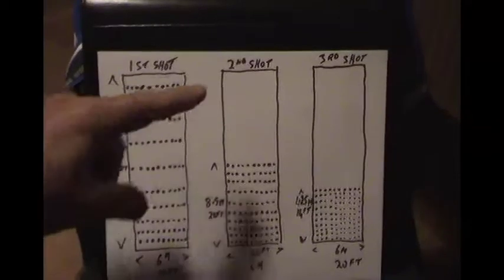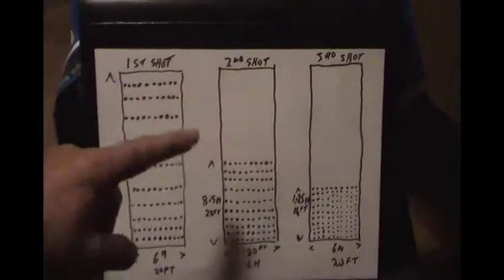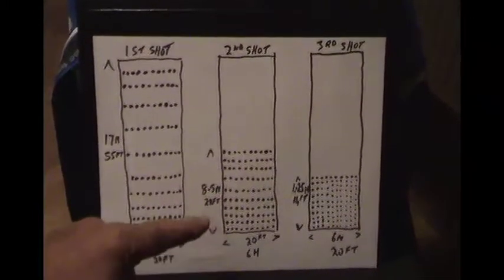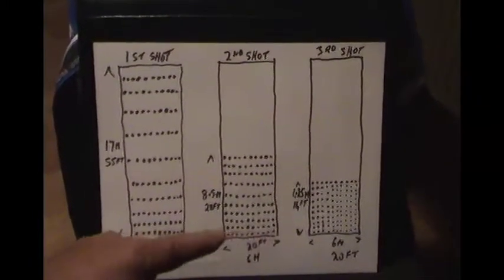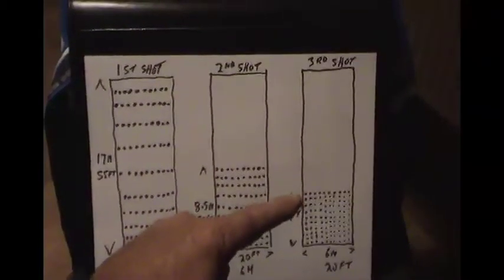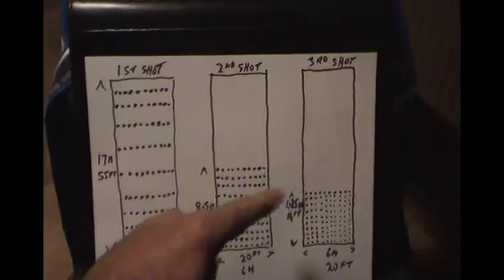Then the second shot would be moving the 100 people into half this area: 8.5 meters by 6 meters, roughly 30 feet by 20 feet, same thing 10 by 10. Then for the third shot we would move the people into an area half this size again.